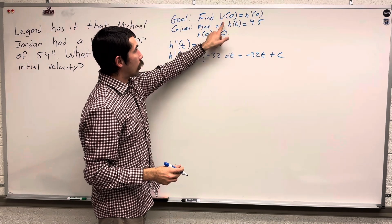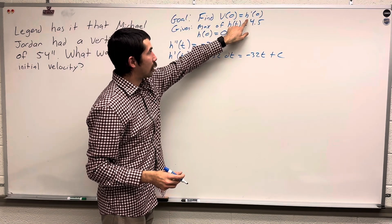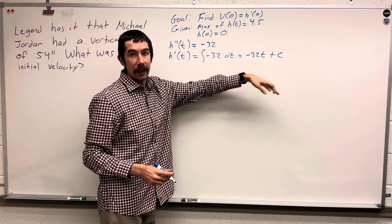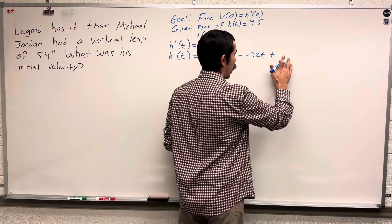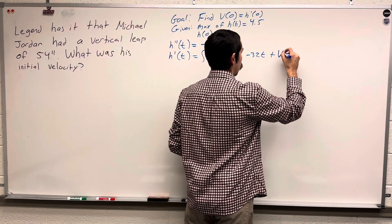Which is negative 32 t plus some constant. The constant, when we sub in 0, we get c. It's our initial velocity. So I'm going to write that as v sub 0, which is what we're trying to find.